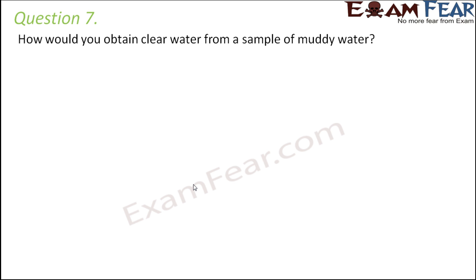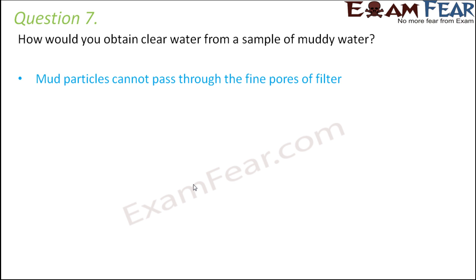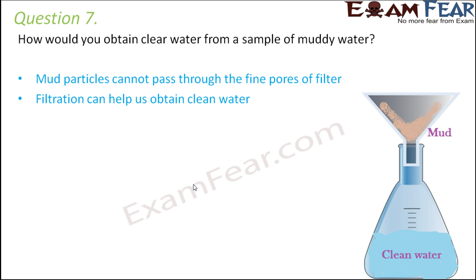Question number 7: how would you obtain clear water from a sample of muddy water? Decantation alone is not a foolproof process here because some muddy particles might remain in the upper layers of water. Filtration is the better option, since the filter paper has extremely tiny pores that will not allow even a single trace of mud to pass through. Only the water passes through, giving us completely clean water.